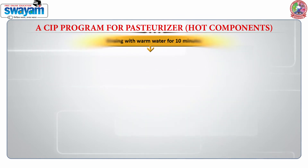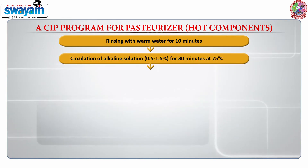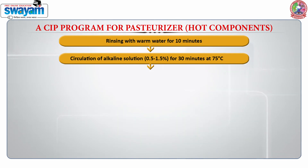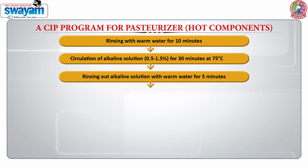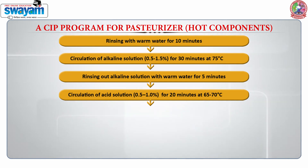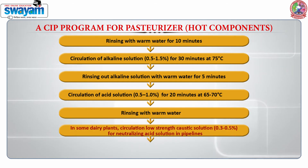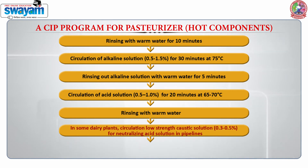The first step is to rinse with warm water for 10 minutes. This is followed by circulation of alkaline solution at a strength of 0.5 to 1 percent for 30 minutes at a temperature of 75°C. After this, we rinse out the alkaline solution with warm water for 5 minutes. This is followed by circulation of acid solution at 0.5 to 1 percent strength for 20 minutes at 65 to 70°C. Then rinsing with warm water, and in some plants an acid solution run is used to neutralize remaining alkali on the surfaces. Finally, we do a final rinse with water.